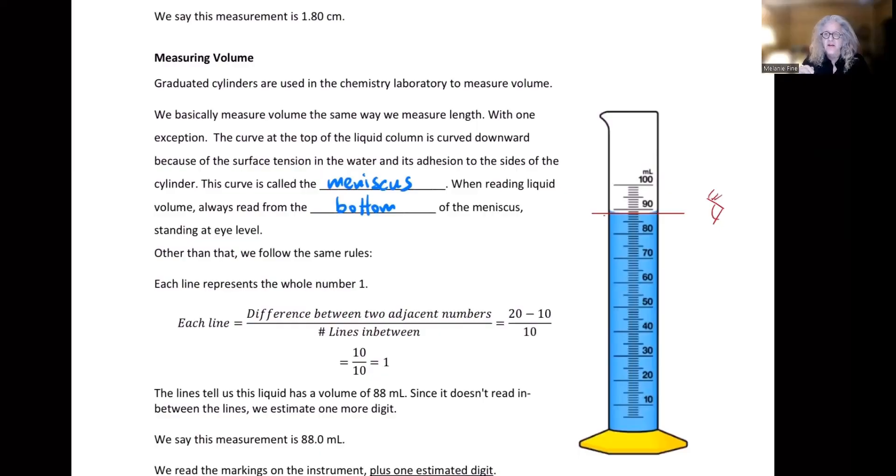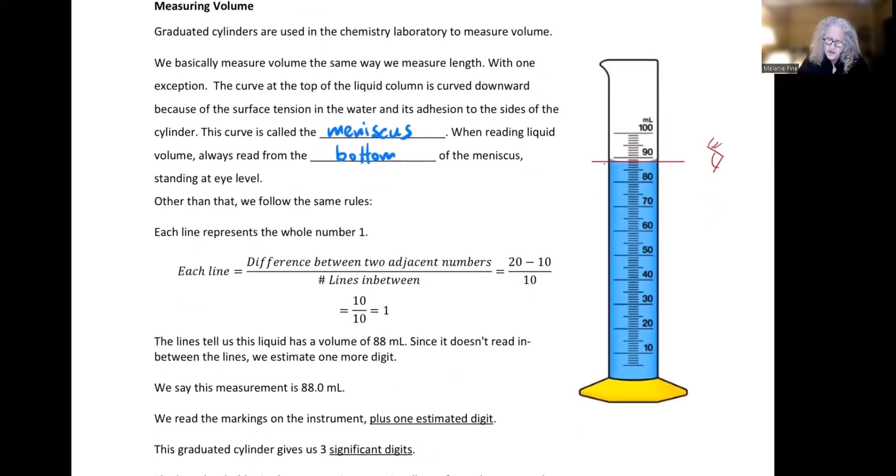Other than that methodology of reading graduated cylinders, the determination of significant digits and taking measurements is the same. So let's say I actually was pretty accurate where I landed the bottom of that meniscus. I first have to know what each line represents. Well, I know it's milliliters. And every number here is milliliters, 10, 20. This is milliliters. It's in tens of milliliters. But what do the individual lines represent?